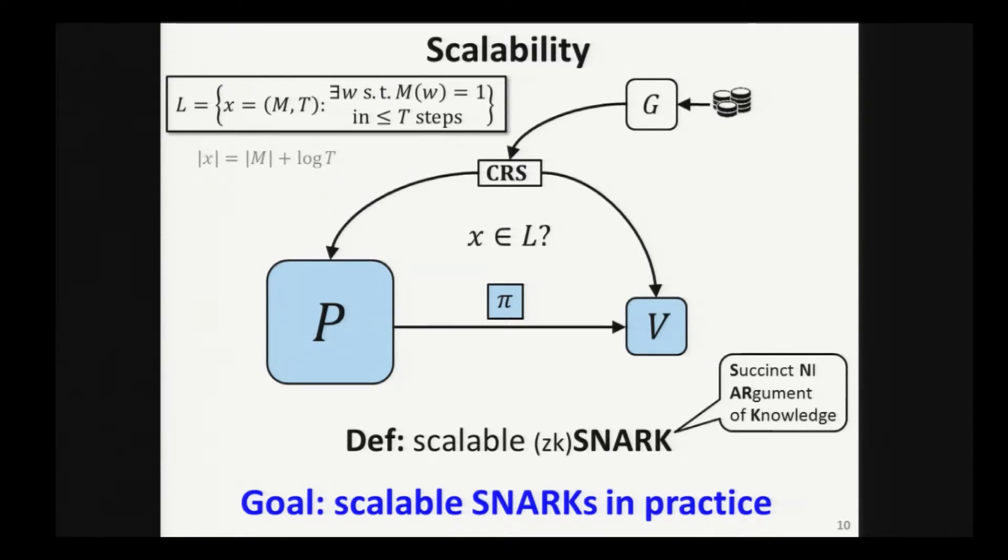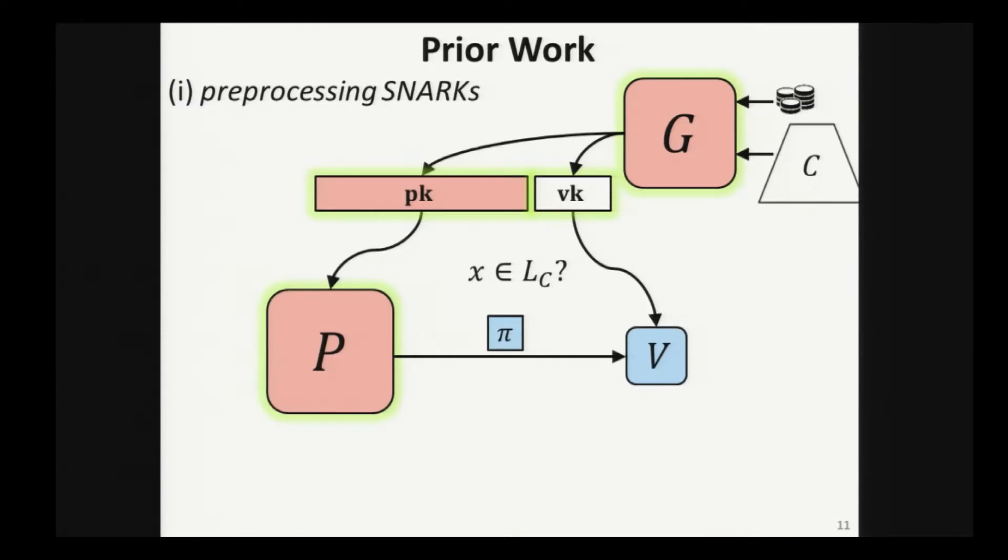What I want to do next is to tell you about some prior work. So what do we know about this primitive? First thing is that we know a lot about a weaker primitive that is known as a preprocessing SNARK. How does it look like? Well, here's a picture. I have highlighted the differences. So while on the one hand, a preprocessing SNARK continues to have a short proof and a cheap verification, there are differences, or rather, it continues to have certain inefficiencies.